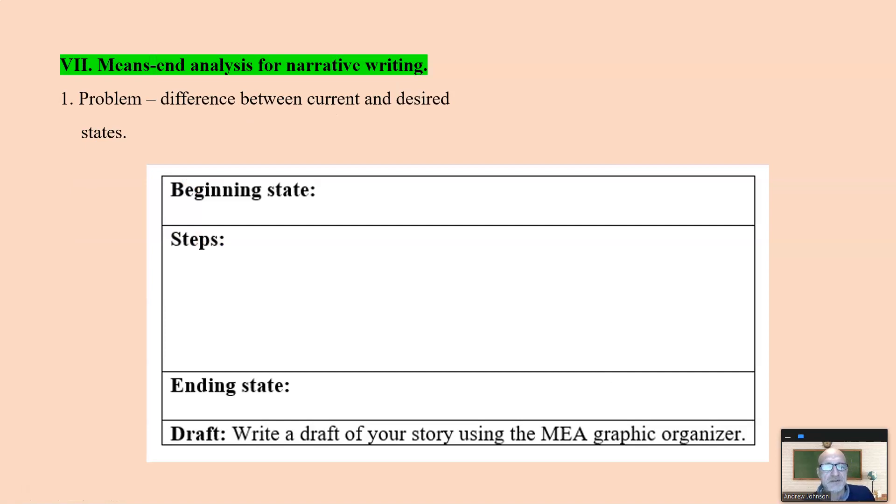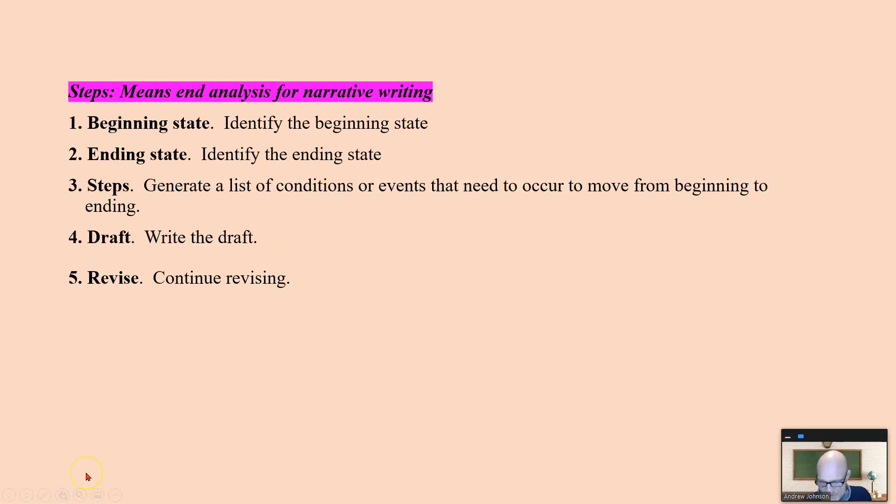Means-end analysis. And again, for writing a narrative, a story. Start with the beginning state, the ending state. And by the way, one definition of problem is noticing the difference between current and desired states. This is the beginning state, this is the ending state. This is what needs to move from beginning to end. It's called a means-end analysis for narrative writing. You could use this with a personal narrative: beginning, ending, the steps that got me there. So you're describing just a part of your life, personal narrative.